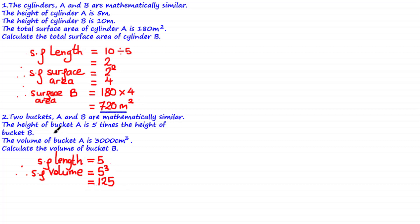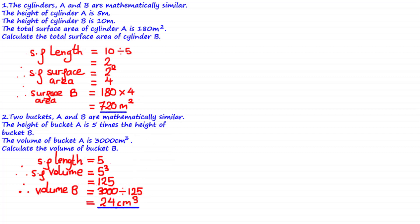Because the height of bucket A is five times the height of bucket B, bucket A is larger than bucket B, meaning the volume of bucket A is larger than the volume of bucket B. So to find the volume of bucket B, we divide 3000 — the volume of bucket A — by the scale factor of volume to get that the volume of B is equal to 24 centimeters cubed.